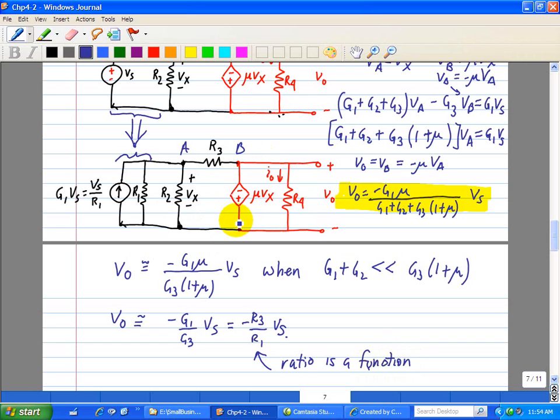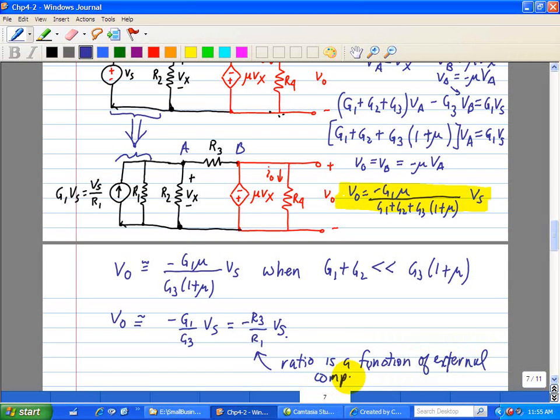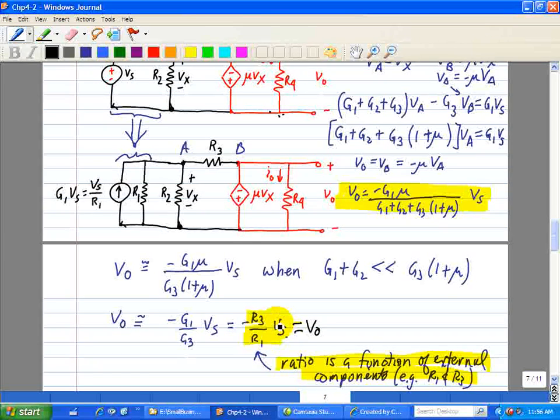That is, the internal components associated with the op-amp. Because we, here, we assume a very large gain. And that's what makes this unique, so that the ratio is only a function of external components. This case, for example, that's just R1 and R3. Let me highlight this. So, V0 is equal to the ratio with an inversion of R3 minus R1 times Vs.